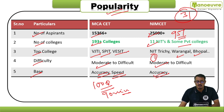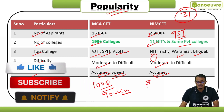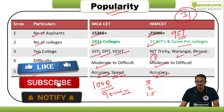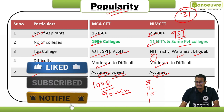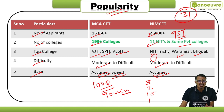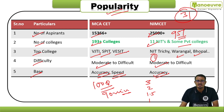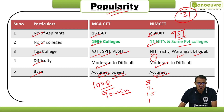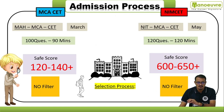For NIMCET, the marking system is based on 3, 2, 1.5, and 1. If you are not aware of this, watch the previous videos on Maharashtra MCA CET and NIMCET on YouTube for full details. Accuracy and speed must be maintained for MCA CET.